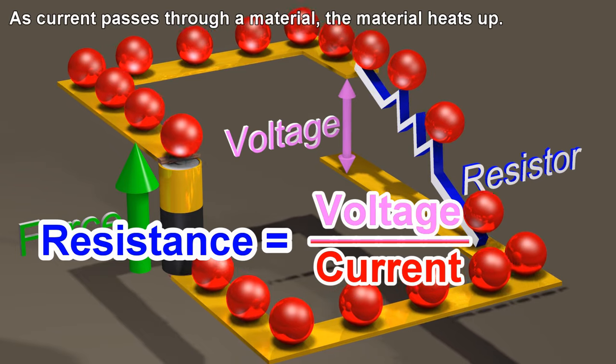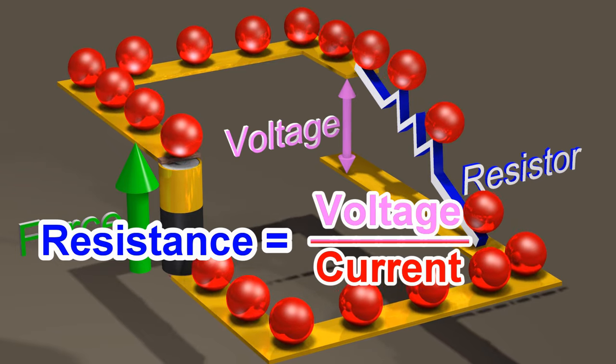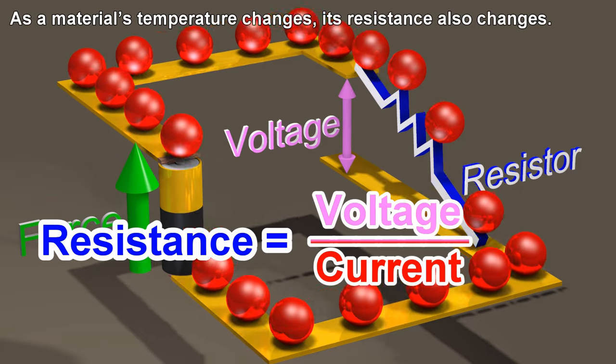As current passes through a material, the material heats up. As a material's temperature changes, its resistance also changes.